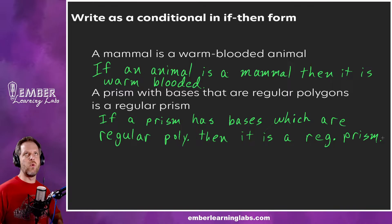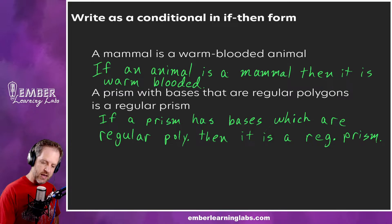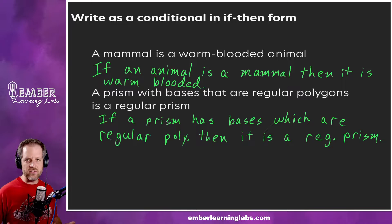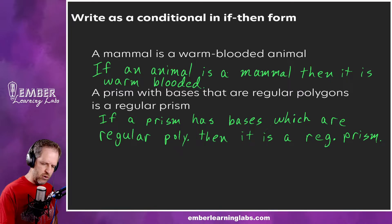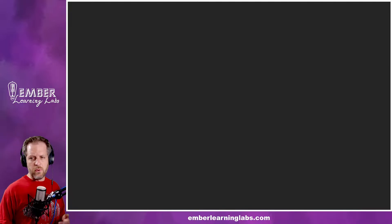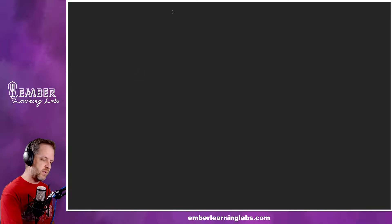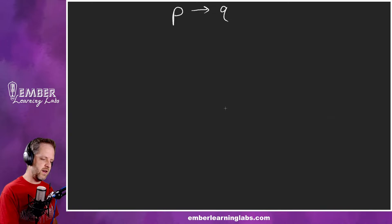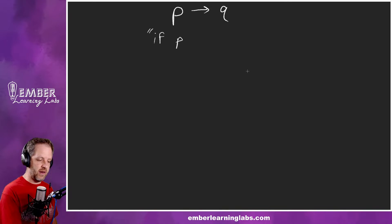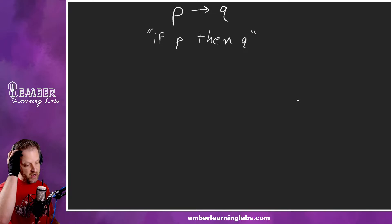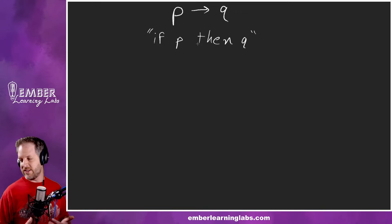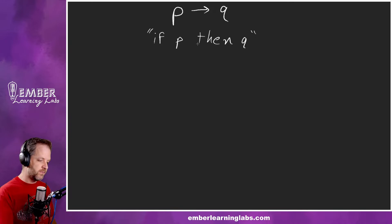Now that we've learned what a conditional statement is and how to write it in if-then form, let's look at truth values. Let's do a truth table for an if-then statement. A conditional statement is made up of two statements — we write it as: if P, then Q. P is the hypothesis statement, and Q is the conclusion statement. We're going to write the truth value for if P, then Q.